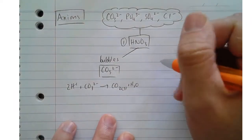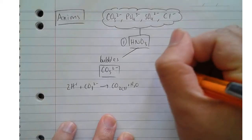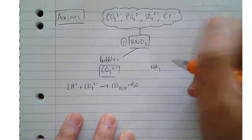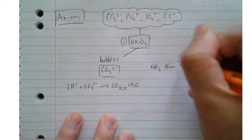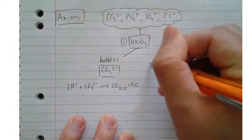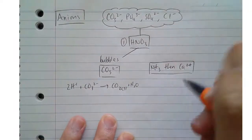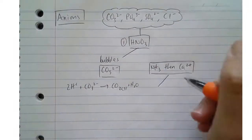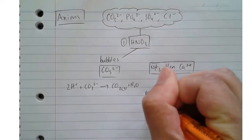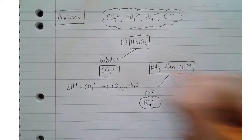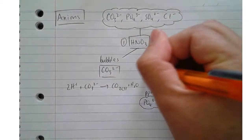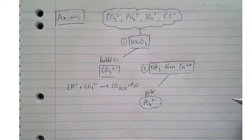The next step that we would do, we would add ammonia to neutralise the acid, then we would add a source of calcium ions, so like calcium nitrate, for example. That then we're going to get a precipitate with phosphate, but not with either sulphate or chloride. So that's our second step.